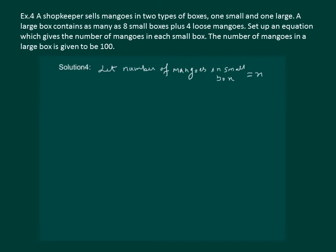Now let us read the condition again. A large box contains as many as 8 small boxes plus 4 loose mangoes. So mangoes in the large box would be 8 small boxes, means 8X, since we have assumed that number of mangoes in one small box is X. So 8 small boxes will have 8X mangoes plus 4 loose mangoes. Further in the question it is also given that number of mangoes in a large box is 100. So that means the equation is 8X plus 4 equals 100.